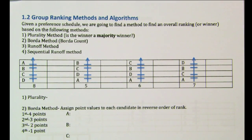Hi, this is Discrete Math, Section 1.2, Group Ranking Methods and Algorithms. We're going to look at a lot of different ways to figure out who a winner is in a potential runoff or election. The different methods we're going to be going through are plurality method, Borda method, runoff method, and sequential runoff. We're going to eliminate candidates one by one and then do a head-to-head at the end.